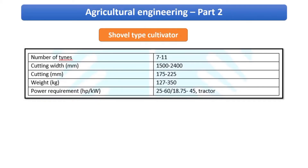The shovel type cultivator is one where shovels are mounted on the cultivator. The number of tines can be seven to eleven, and there is a power requirement with a rate given for operation.